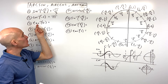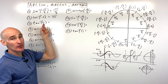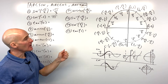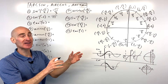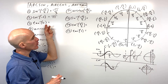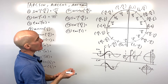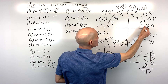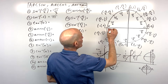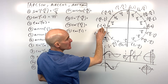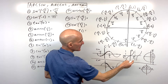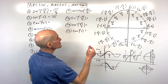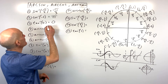For number three, the tangent inverse of zero — meaning tangent of what angle equals zero? On the unit circle, tangent is y divided by x. The y-coordinate divided by the x-coordinate equals zero at zero radians: zero over one is zero. The other option is not in the restricted domain, so for tangent inverse restricted from negative pi over two to positive pi over two, the answer is zero radians.